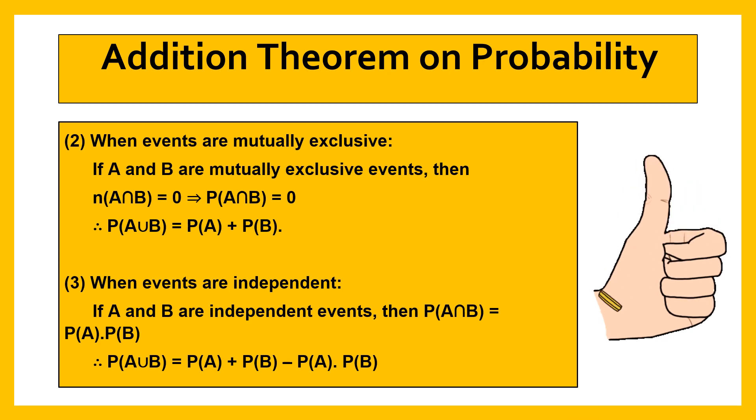Now when events are independent. If A and B are independent events then we can use this formula.